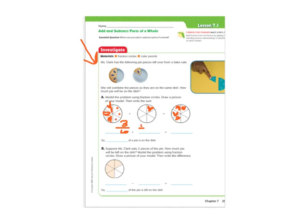And then the second one was one out of six pieces of pie. So all together, that's four out of six pieces of pie. So four-sixths of a pie is on the dish.